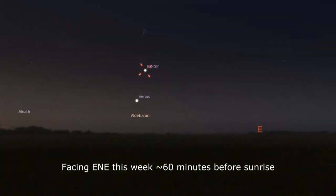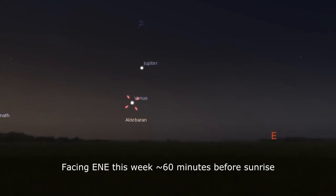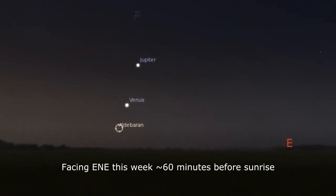That leaves the morning planets with their own trio, but in this case, only one star and two planets. Look for Jupiter with Venus below it, and closest to the horizon, just before the sun brightens the sky, you may spy Aldebaran in Taurus. These make for great photographic opportunities, see what you can capture.